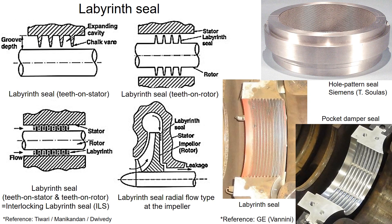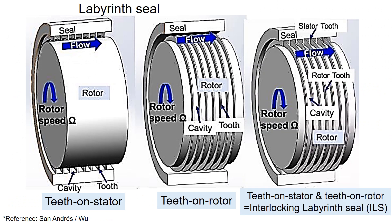There are many types of seals, including labyrinth seals, pocket damper seals, hole pattern seals, and others. The types of labyrinth seals are named based on the location where the tooth is attached.